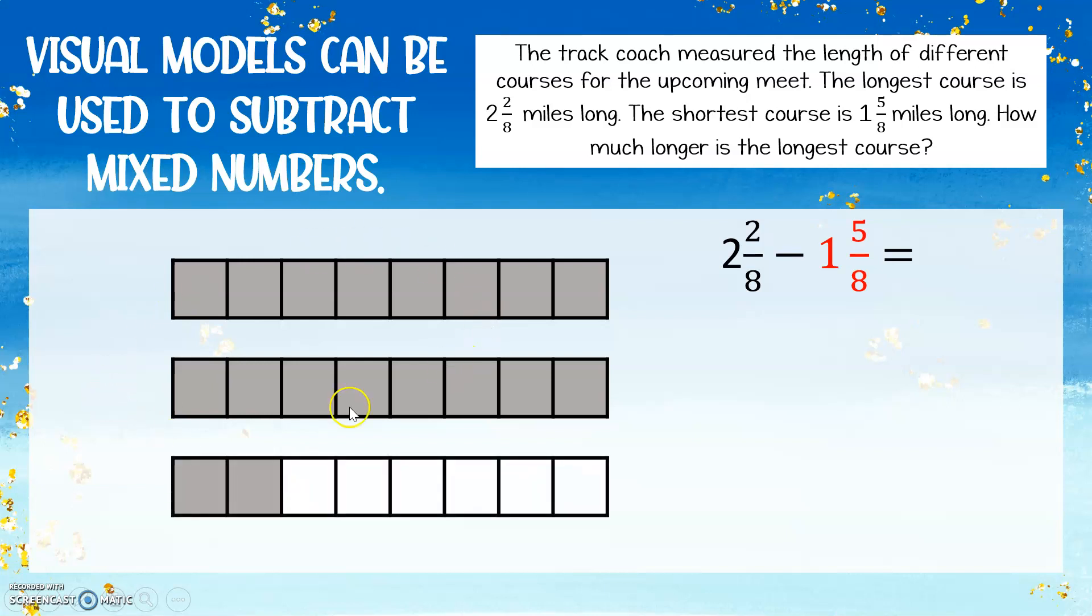So here we have 2 and 2 eighths. Now we need to subtract. I always like to subtract the whole number first. So if I'm taking away 1, I'm going to eliminate one of these wholes. And if you think about it, 2 minus 1, we're left with one whole. Makes sense.